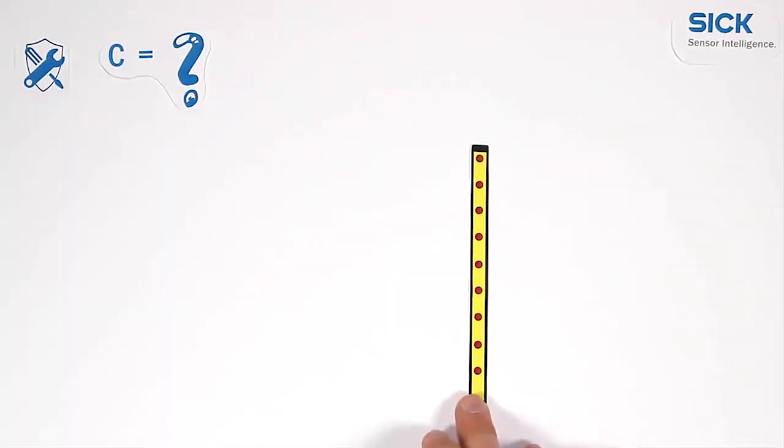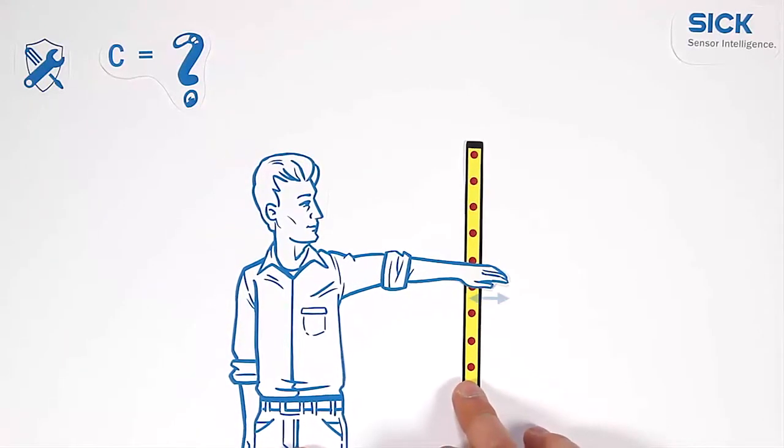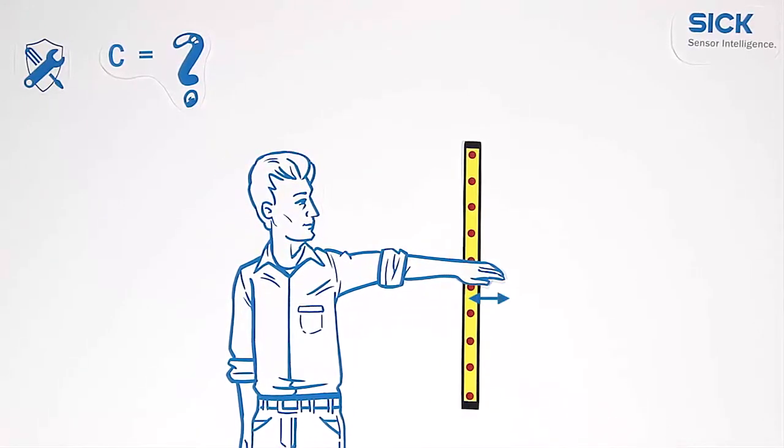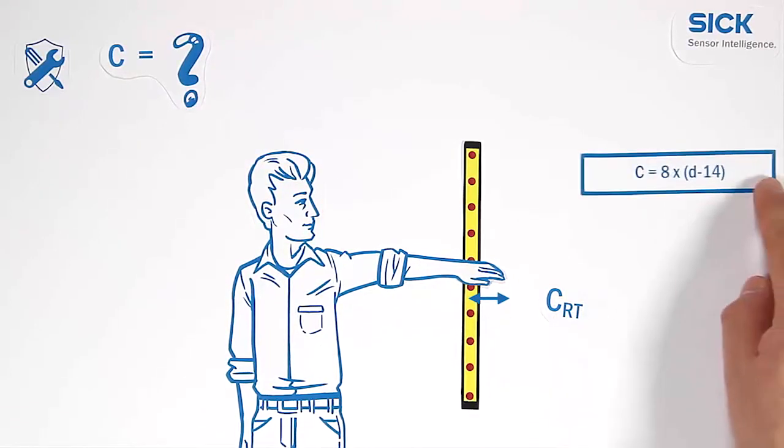Let's take a look at this light curtain. Decisive is how far can the operator reach into the hazardous area without being detected. This depends on the selected resolution D as shown in the formula.